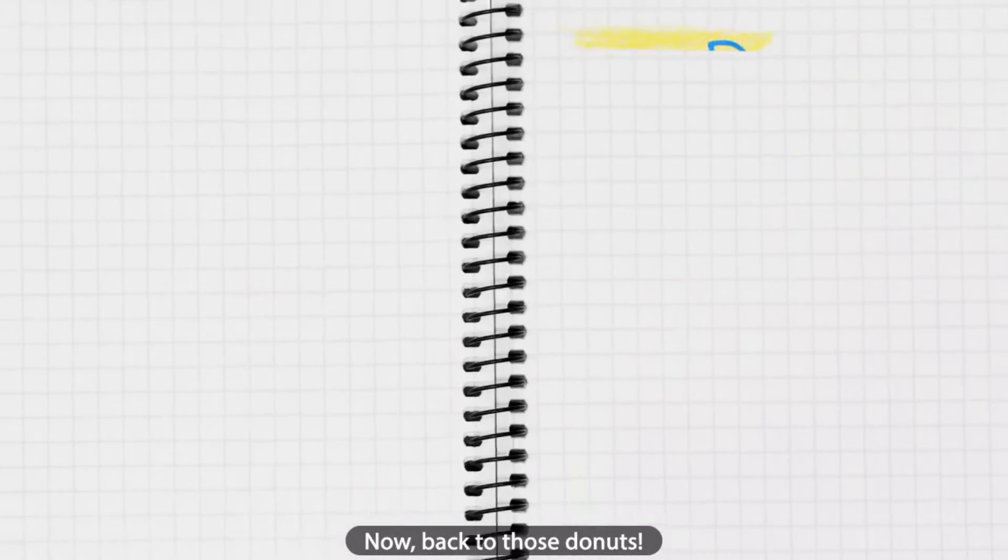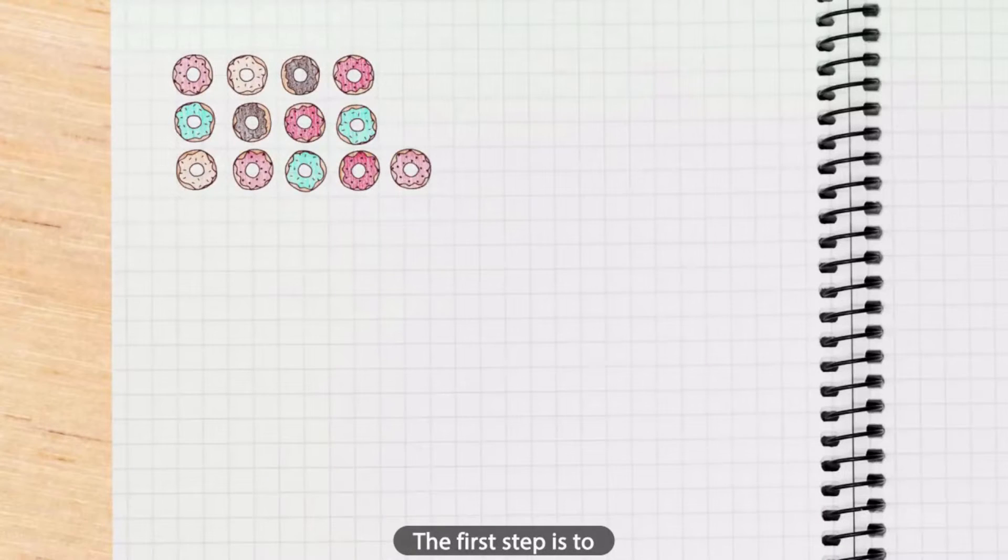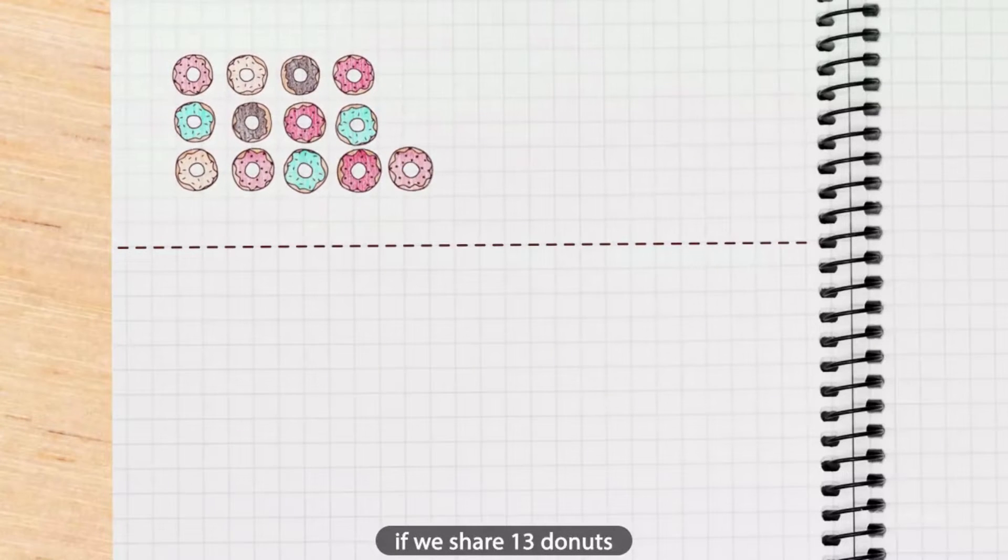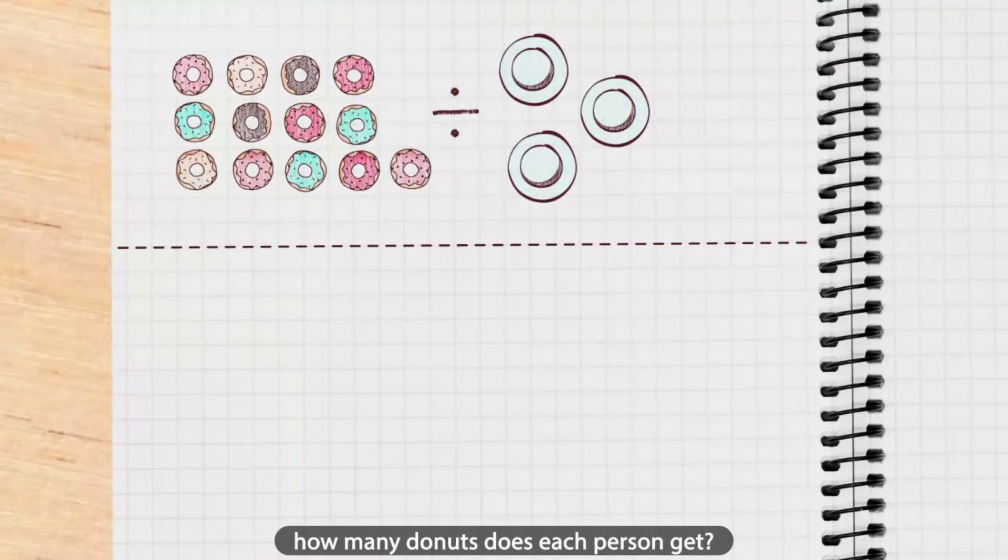Now, back to those doughnuts. The first step is to start with the question: If we share 13 doughnuts between three people equally, how many doughnuts does each person get?